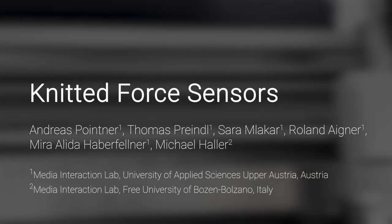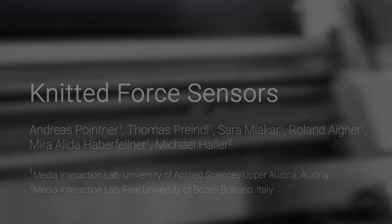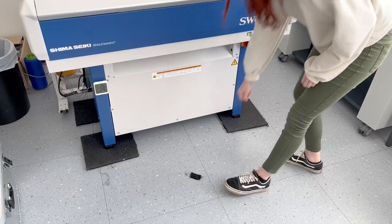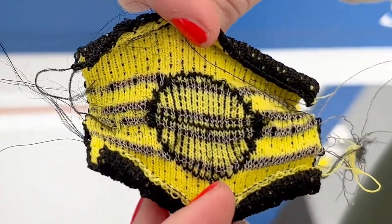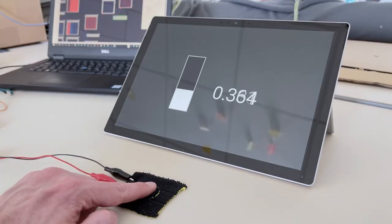We present two types of knitted resistive force sensors for both pressure and strain sensing. Through the integration of functional yarns during the manufacturing process, we knit ready-made force sensors.